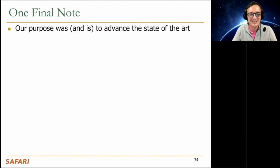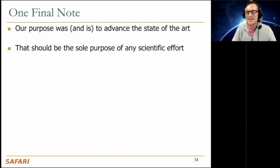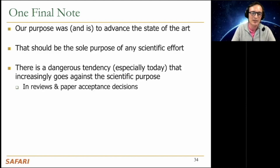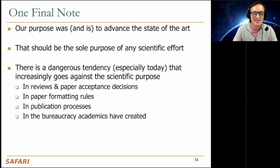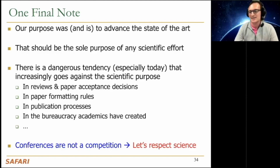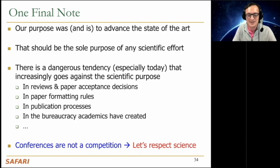I want to end with a note because I worry about our community sometimes. Our purpose was and is to advance the state of the art, and I believe that should be the sole purpose of any scientific effort. I feel there's a dangerous tendency, especially today, that increasingly goes against the scientific purpose — in how reviewing is done, how paper acceptance decisions are made, paper formatting rules, publication processes, and bureaucracy. If you think about conferences as just a way of advancing science, there's only one metric: does this paper advance the state of the art?